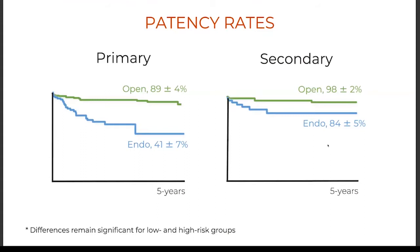Primary patency was much better with open: 89% versus 41%, and secondary patency was also better. But this data was from 2004–2005, before covered stents were available — we still had bare-metal stents mounted on balloons. We'll see what happens with the evolution of stent technology.